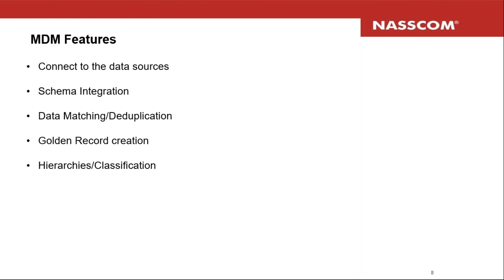How does an MDM system work? To build this unified view, an MDM system will talk to all these data silos — it will probably do a JDBC request, get the data out, or there would be an ETL process governed through the MDM system. The data is brought together and processed. The MDM helps the business piece this together as an entity. For example, a customer might be defined by attributes like first name, last name, email, phone number, organization name, and address — whatever is valuable to know about the customer defines your entity.